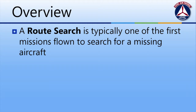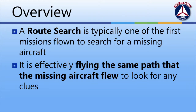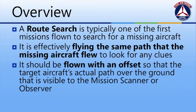A route search is typically one of the first aerial missions we fly when we're looking for a missing aircraft. Sometimes this is called a hasty search. This is accomplished by retracing the steps that the missing aircraft likely flew, either from an expected course or from the filed flight plan. We want to fly the route with an offset — some distance to the left or right of the actual aircraft's route — so that the mission observer and mission scanner can look at the route flown by the missing aircraft and determine if there are any clues along that.